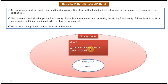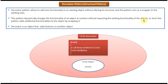So in this way, without affecting the structure of the circle object, I can add color to the circle. Decorator Pattern allows to add new functionality to an existing object without altering its structure — without affecting the structure of the circle object we are adding a new functionality called set color. This pattern acts as a wrapper to the existing class — this circle decorator wraps the existing circle object. This pattern also dynamically changes the functionality of an object at runtime without impacting the existing functionality of the objects — it is adding color to the circle without affecting the functionality of the object.